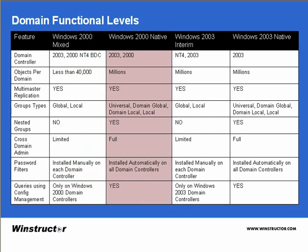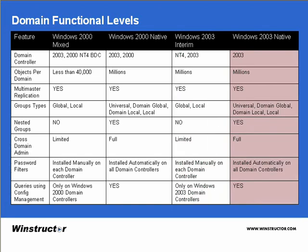The Windows 2000 Native domain level enables you to run a Windows 2003 domain controller in conjunction with Windows 2000 and other Windows 2003 domain controllers. The 2003 Interim Level allows a Windows 2003 domain controller to interact with domain controllers running Windows NT4 or Windows 2003, but does not support domain controllers running Windows 2000. Finally, the Windows Server 2003 Native Domain Functional Level is only available when all of your domain controllers are running Windows Server 2003.